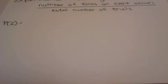To find the probability based off an experiment, we are going to take the number of times an event occurred over the total number of trials.